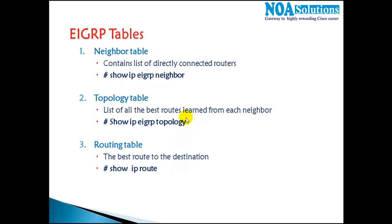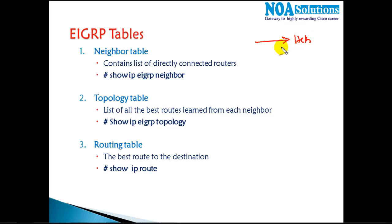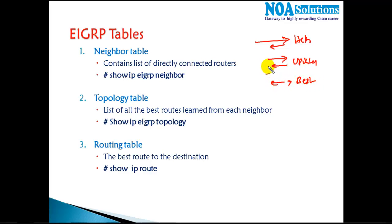The entire process goes in three steps: first, sending and receiving hello messages; second, sending and receiving updates; and third, calculating the best route. That is what happens the first time EIGRP initializes.